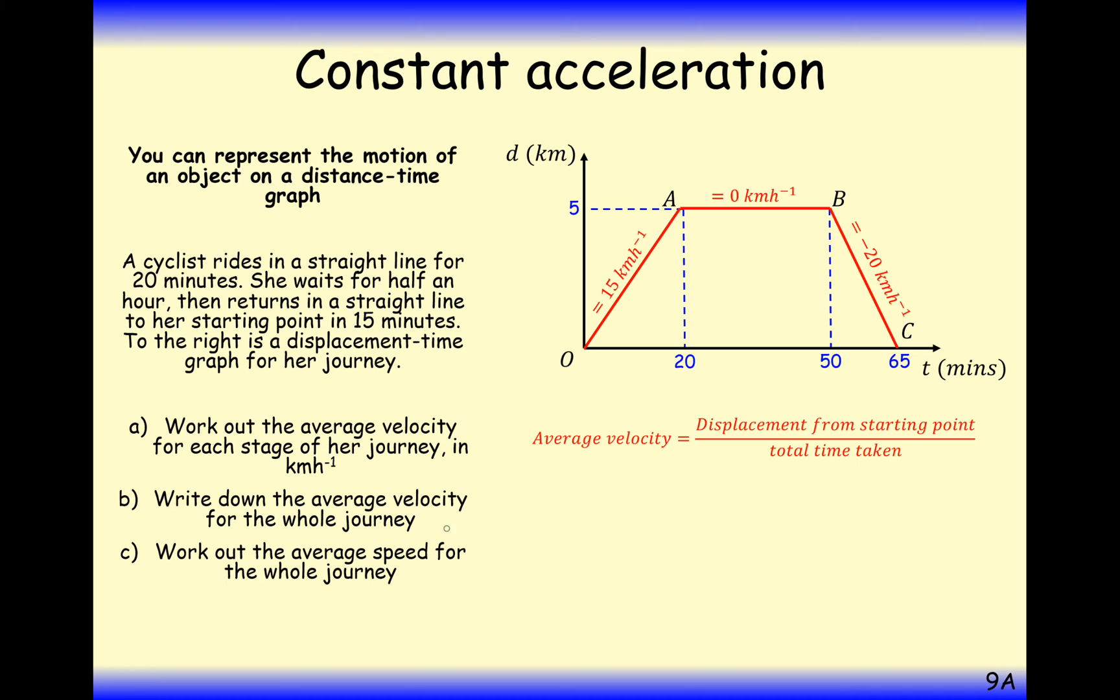The next part is write down the average velocity for the whole journey. The average velocity is the displacement from the starting point divided by the total time. But because this person has traveled away from the starting point and back to the starting point, that displacement has been zero. So the average velocity in this case is zero, because no displacement has happened and the difference between the finishing position and the starting position is zero.